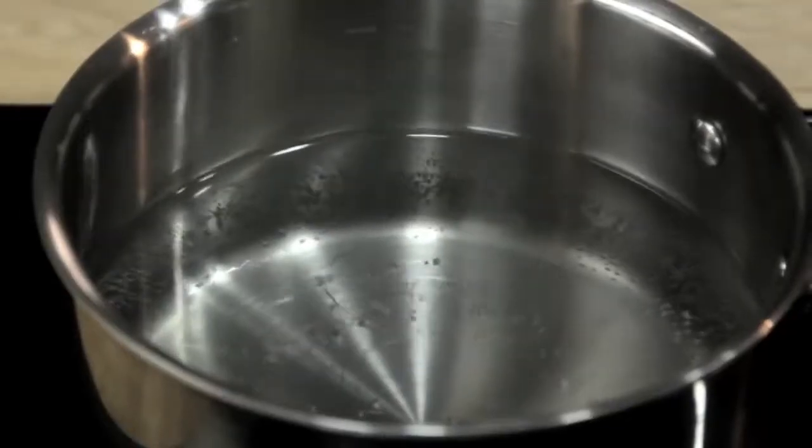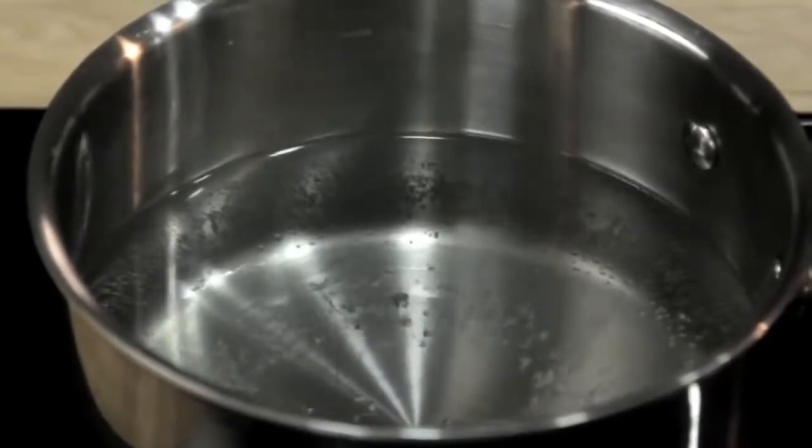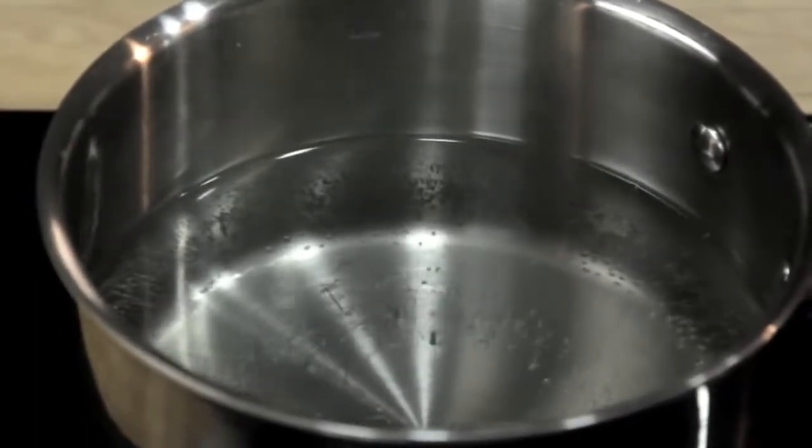Even better is that the strainer is actually the ideal tool for lowering the egg into the water. What I've got here is a pot of water at 180 degrees Fahrenheit, which is just about the temperature that the water is quivering but not quite simmering yet.